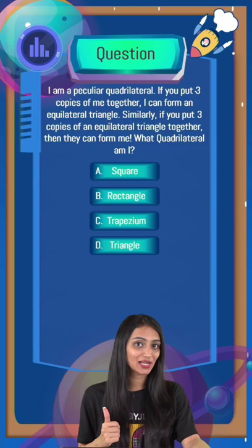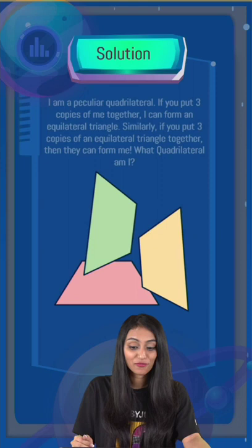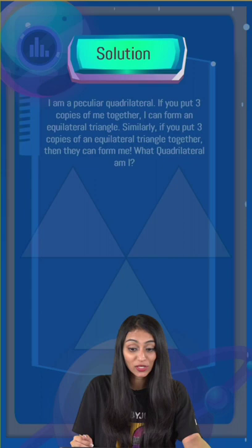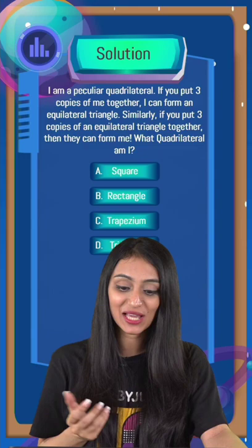The right answer is out of these four options that you can see here. So let's take a look at the solution. Here we can see that we have three quadrilaterals. If we keep them in such a way, when they are joined together, we can see they form an equilateral triangle. According to this riddle, if you put three copies of an equilateral triangle together, then they can form the final quadrilateral. Well, this is a trapezium. So option C is the right answer for this riddle.